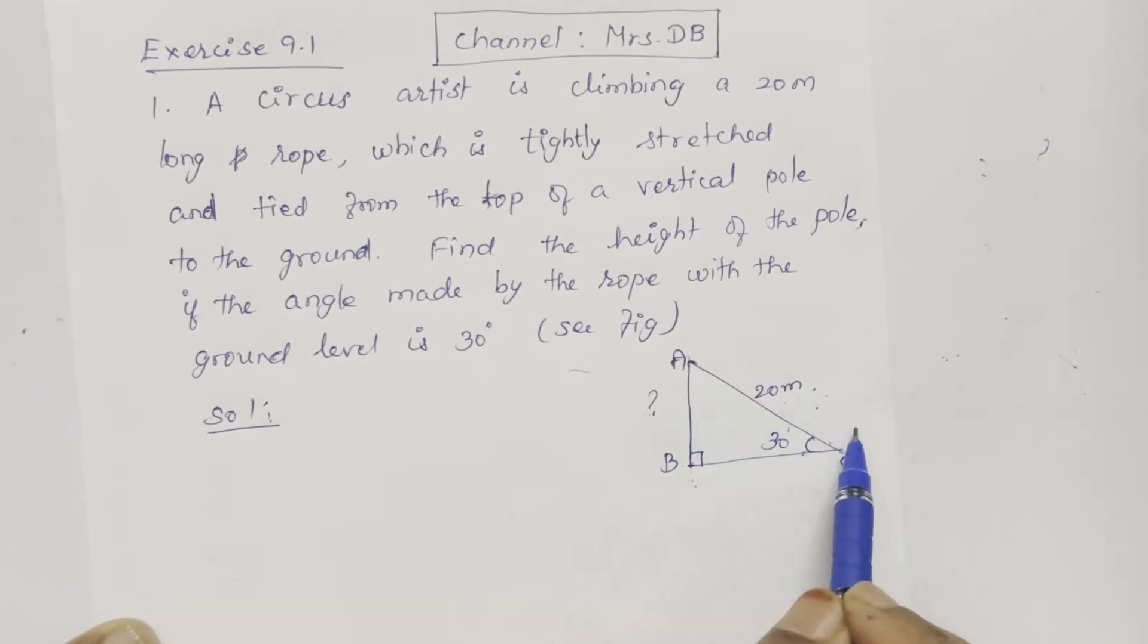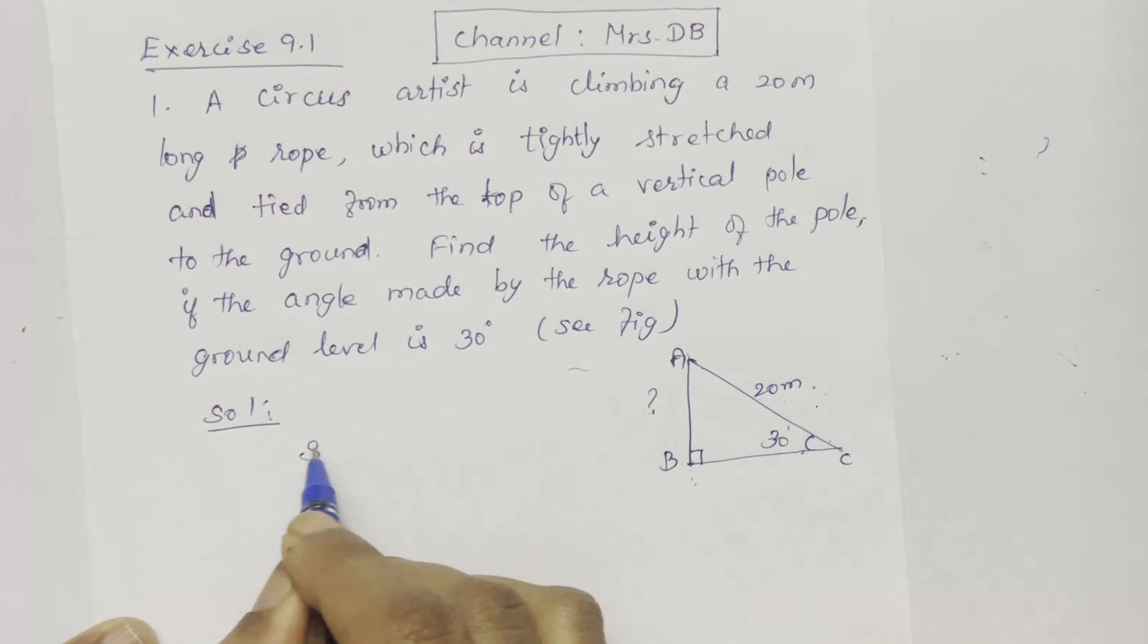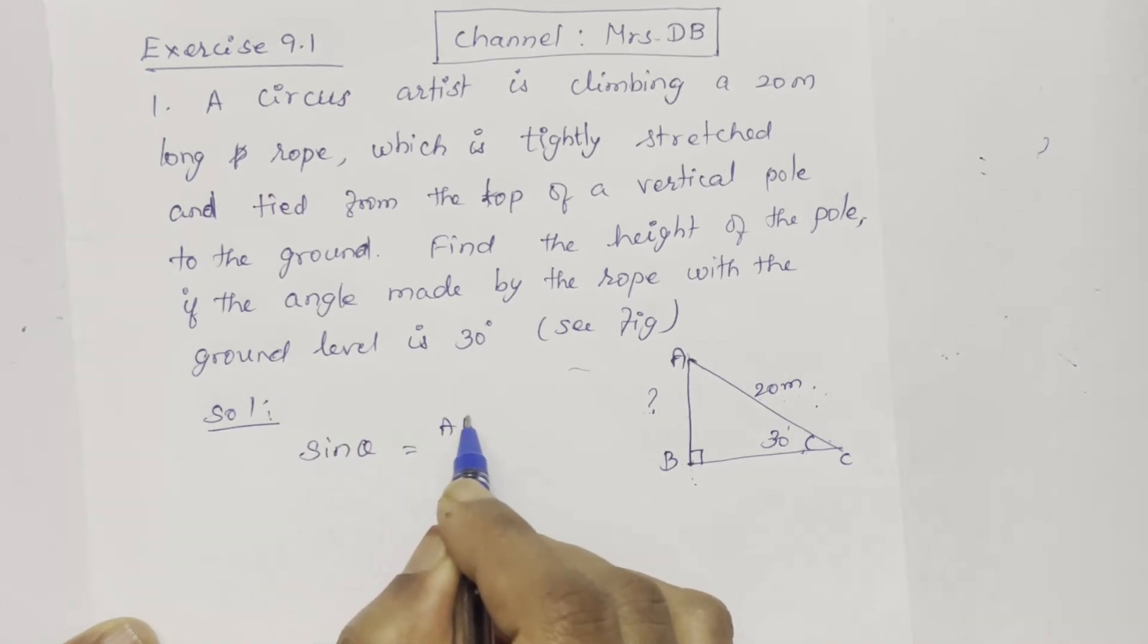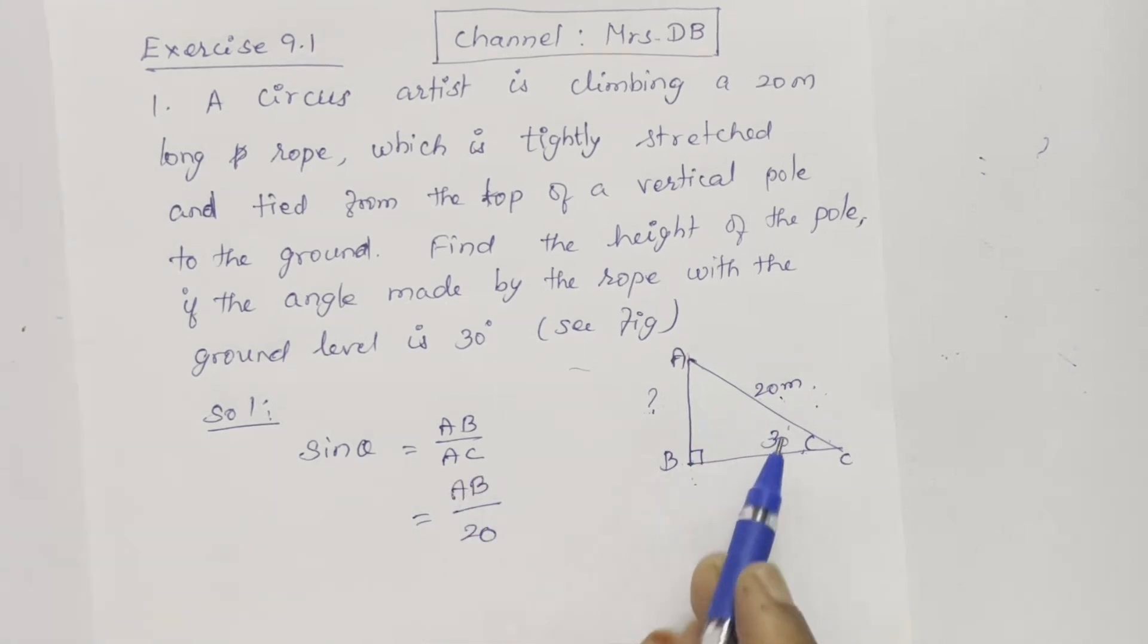Sin theta. Sin 30 equals AB by AC. Sin theta calculate. Sin 30 is 1 by 2.